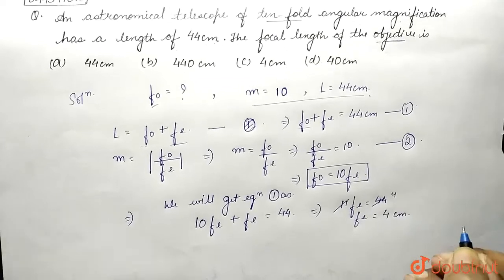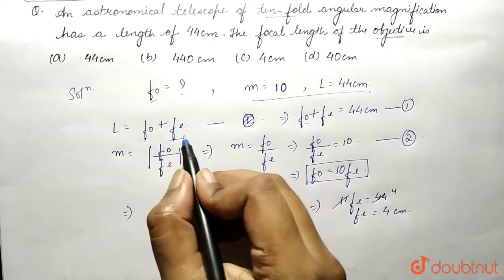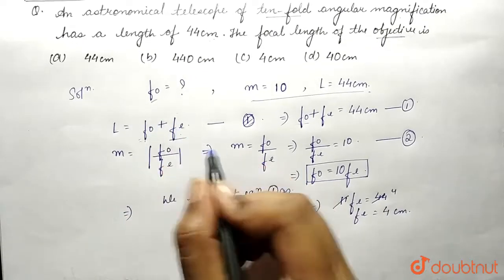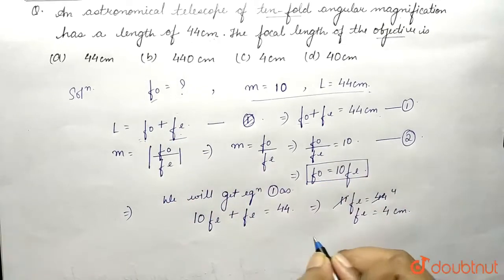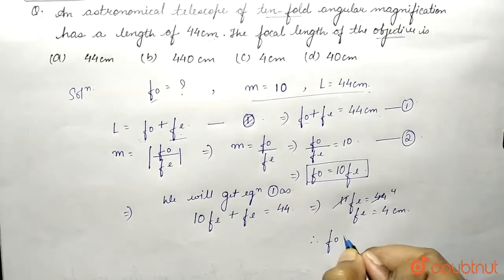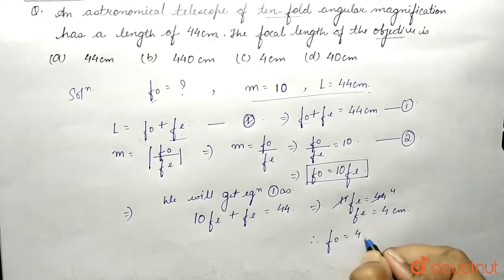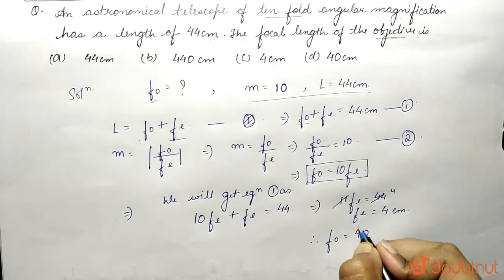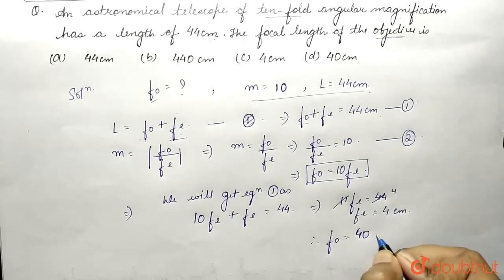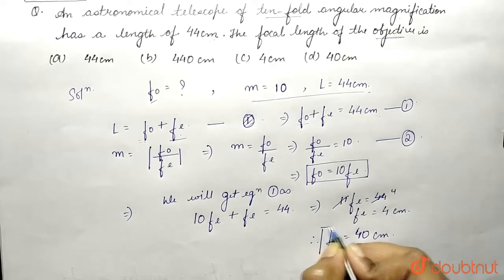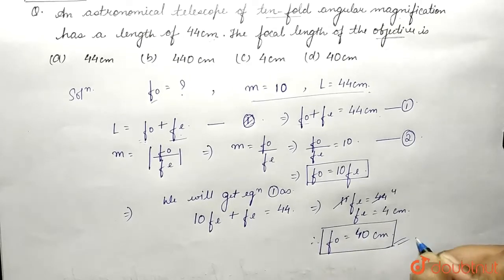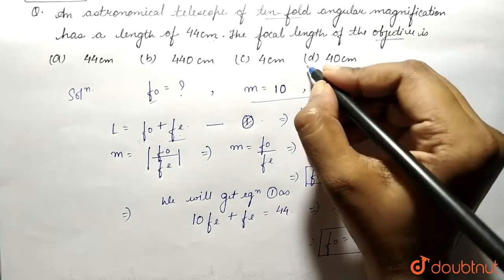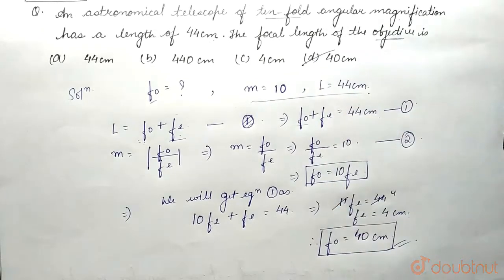Since fo plus fe equals 44, therefore fo equals 44 minus 4, which gives fo equals 40 centimeters. This is the focal length of the objective, and we can see that option D is the correct answer.